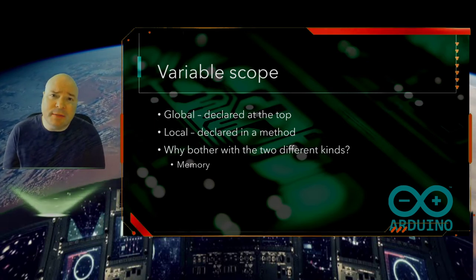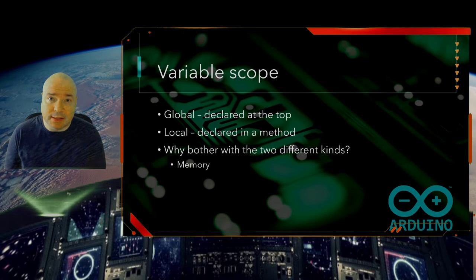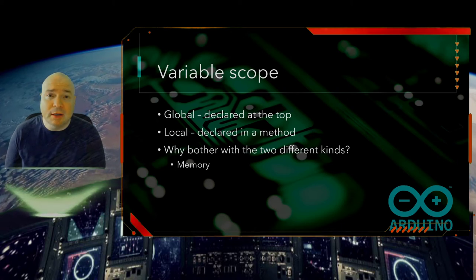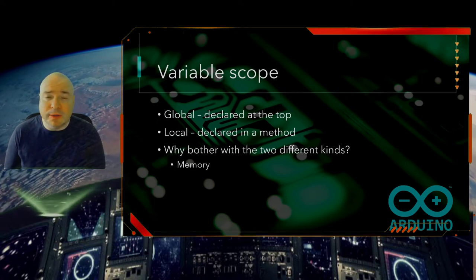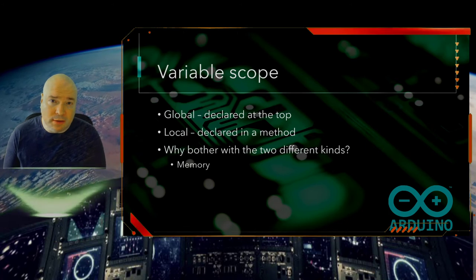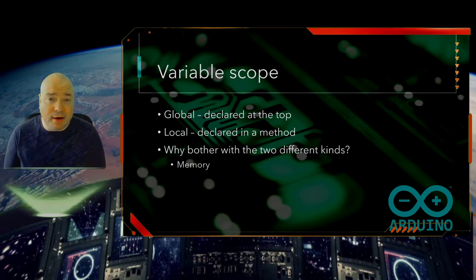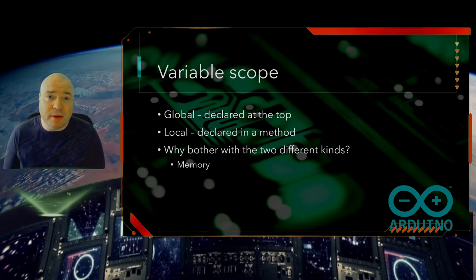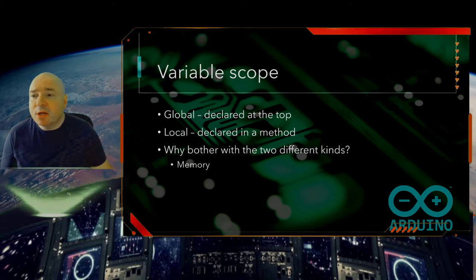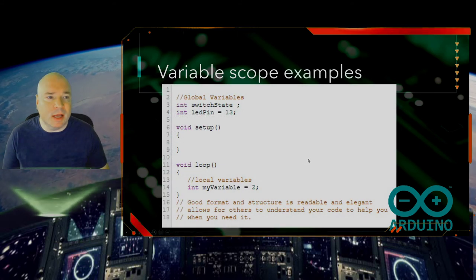So why would we bother with these two different kinds of variables? Well, the main reason is memory. See, if we declare something global, when the program runs, that memory space stays throughout the program, no matter what else is going on. So we have now removed that memory from the rest of the Arduino microprocessor. It can't be used for anything else. If we declare the variable locally, that means once the method has finished running, then the variable disappears from memory. The space is released. Sometimes we call that garbage collection in computer science.